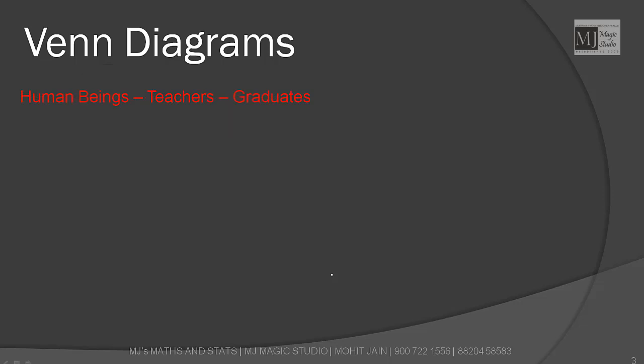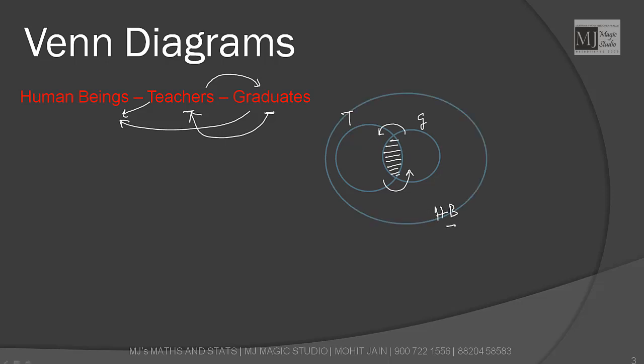Let's try one more example. Human beings, teachers, graduates. Clearly, human beings must be the universal set and we will have teachers and graduates. Few teachers are graduates and few graduates may be teachers. But both teachers and graduates are human beings. Few graduates may be teachers and few teachers are graduates. That's why we have a common set among teachers and graduates.